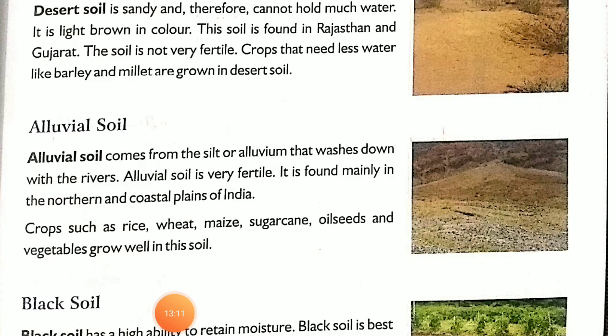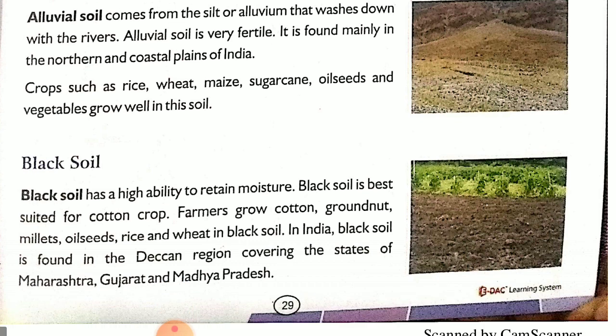Next is alluvial soil, which comes from the silt or alluvium that washes down with rivers. Alluvial soil is very fertile and is found in the northern and coastal plains of India. Rice, wheat, maize, sugarcane, oilseeds, and vegetables grow well in this soil. Next is black soil. Black soil has a high ability to retain moisture, making it the best soil for cotton crops. Farmers also grow groundnut, millet, oilseeds, rice, and wheat in black soil.